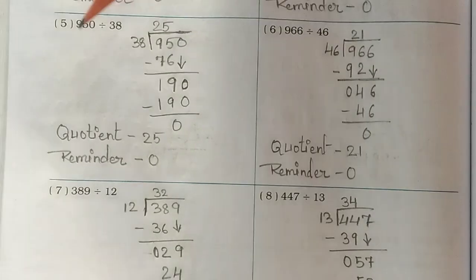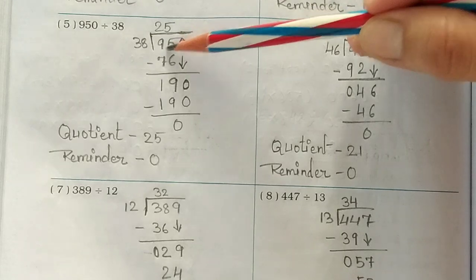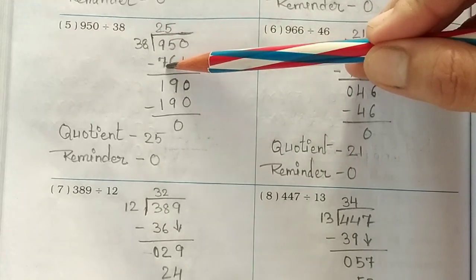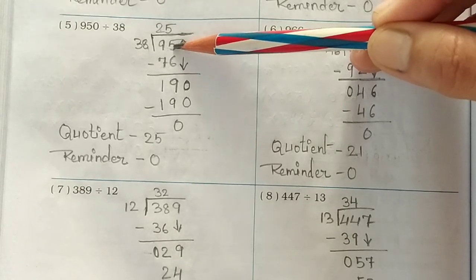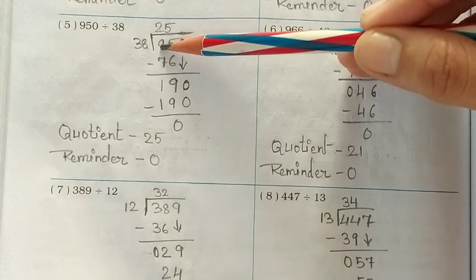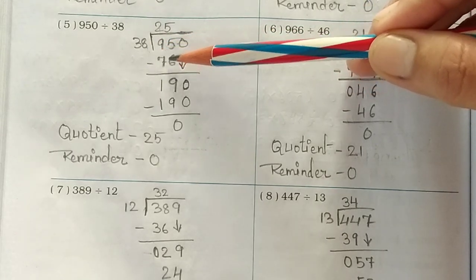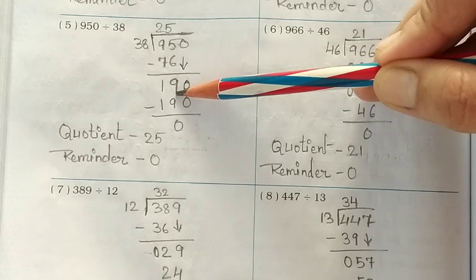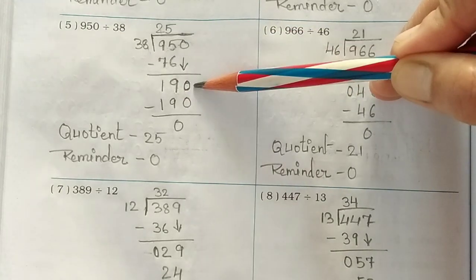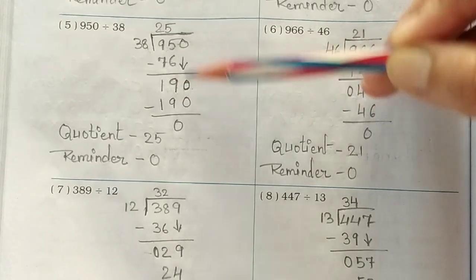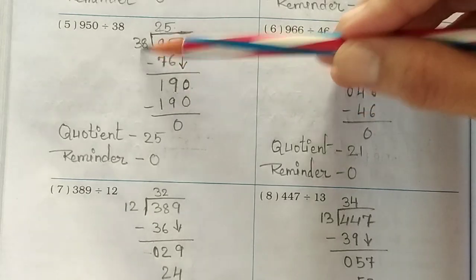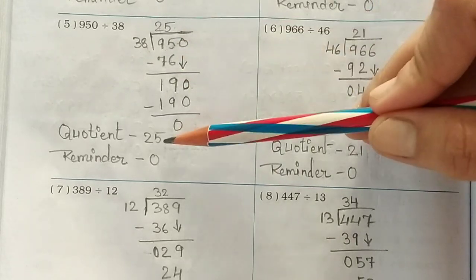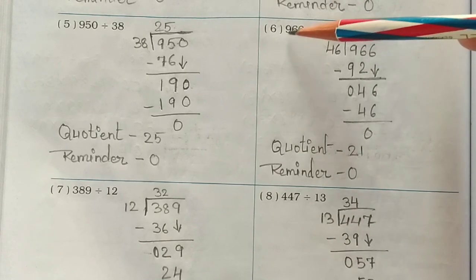Fifth number: 950 divided by 38. Write 38 here. 38 twos are 76 — we take twos because 38 threes would be more than 95. Subtract 76 from 95 and you get 19. Bring down the 0 to get 190. 38 fives are 190 exactly, so zero remainder and your answer is 25. Write it here.